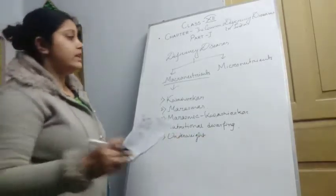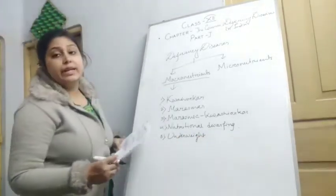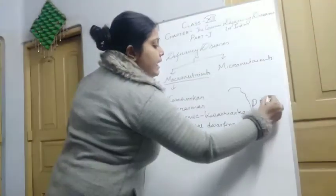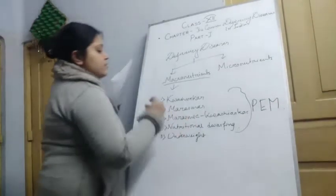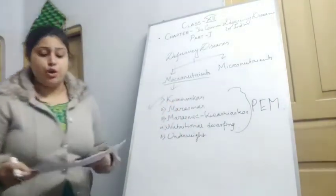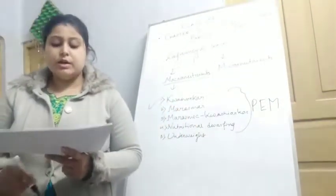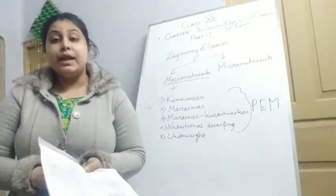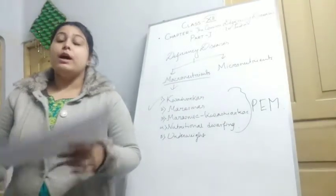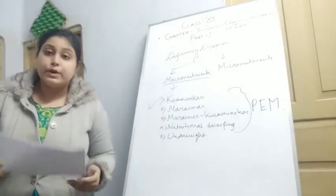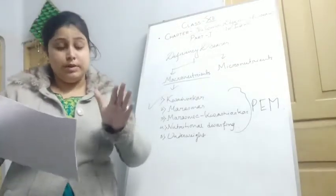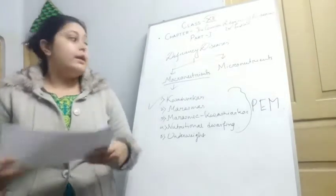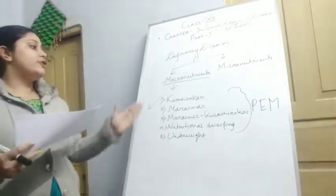We know these all are protein energy malnutrition — these are all types of PEM. The very first is Kwashiorkor. Kwashiorkor is called the disease of the displaced child. It mainly occurs due to the deficiency of protein. Babies who are displaced from their mother can be the sufferer of Kwashiorkor.